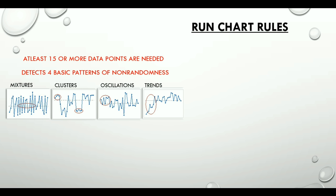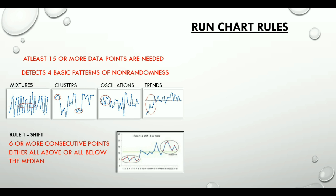Now let's look at four major rules for making inferences on a run chart. Rule one is shift, where six or more consecutive points either all above or all below the median. Rule number two is a trend, where we see five or more consecutive points all going up or all going down.